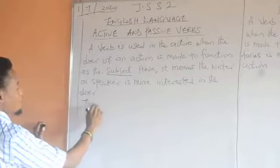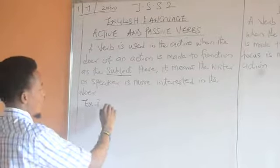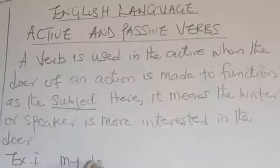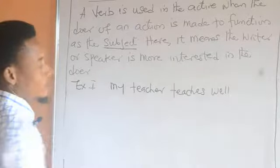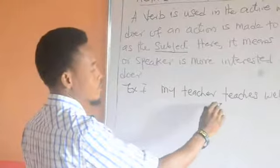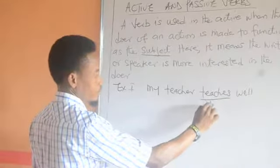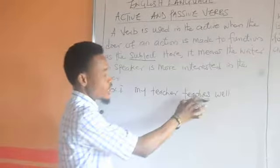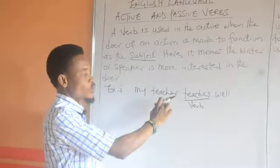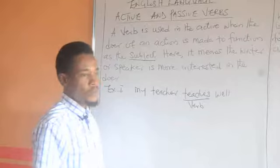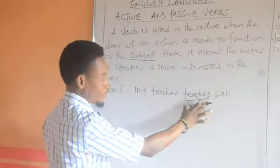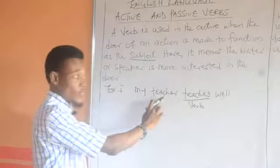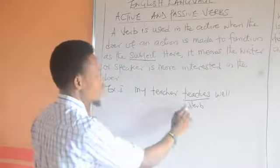Example one: 'My teacher teaches well.' The word 'teaches' is the verb — it is the action of what your teacher is doing. If anybody asks you, 'What is your teacher doing?' — your teacher teaches very well. This particular action makes your teacher, that is the subject, function properly. 'My teacher teaches well' — 'teaches' is the verb.